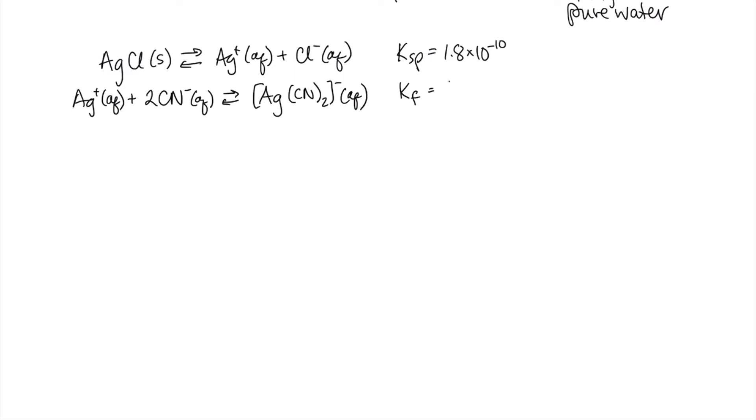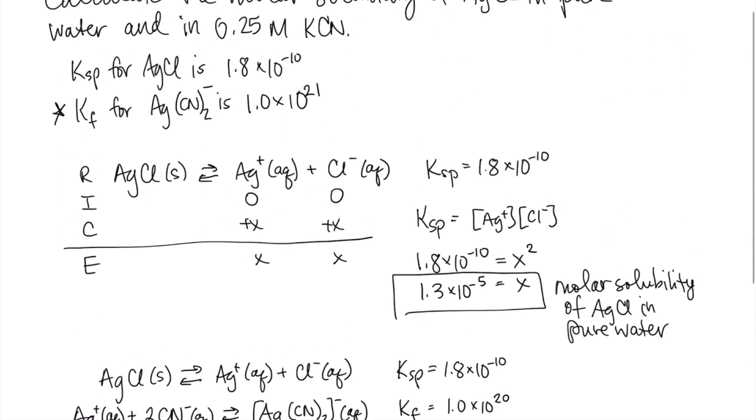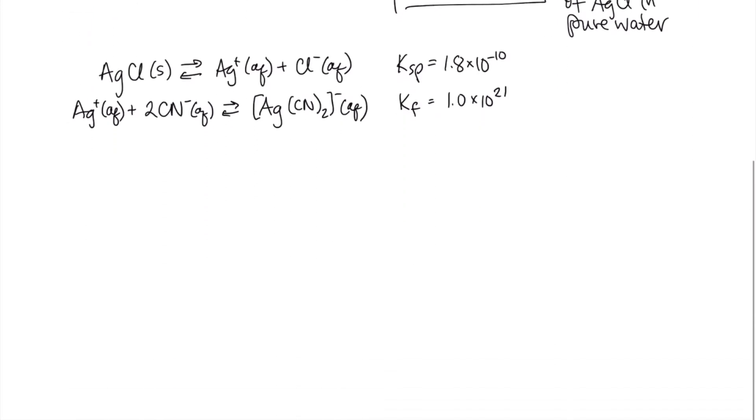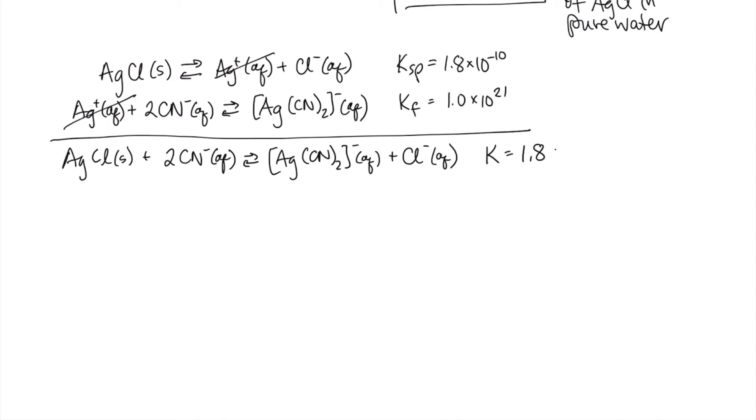So we know the Ksp is 1.8 times 10 to the minus 10. And the Kf is 1.0 times 10 to the 21st. And if we add these reactions together, the silver ions are going to cancel out. We'll end up with AgCl solid plus 2 cyanide ions. And our K is, since we're adding these together, is just going to be these two numbers multiplied together. So 1.8 times 10 to the minus 10 times 1 times 10 to the 21st. And my overall K is going to be 1.8 times 10 to the 11th.